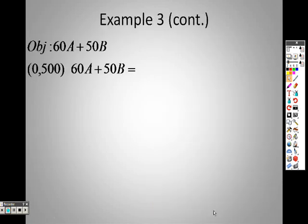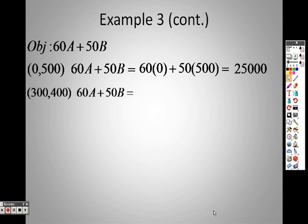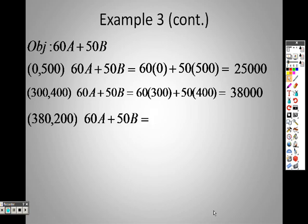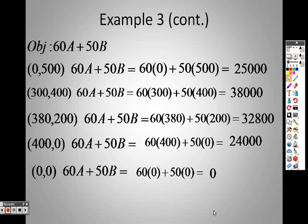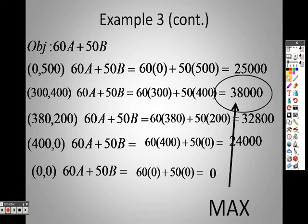So I plug those points in. The first one is 0, 500. When I plug it in, I end up getting 25,000. 300, 400, when I plug that in for A and B, I end up getting 38,000. When I plug in 380 and 200, I end up getting 32,800. When I plug in 400 and 0, I end up getting 24,000. And when I plug in 0 and 0, I end up getting 0. So the minimum, of course, would be 0. But the max, the highest, is 38,000, which is 300, 400. So there's your max.